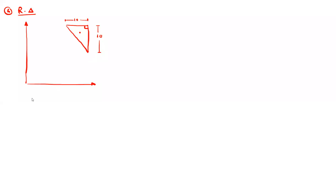For this right angle triangle, this is the location of the center of gravity. So from the 90-degree corner, we can find out this distance. This distance is equal to 10 by 3.